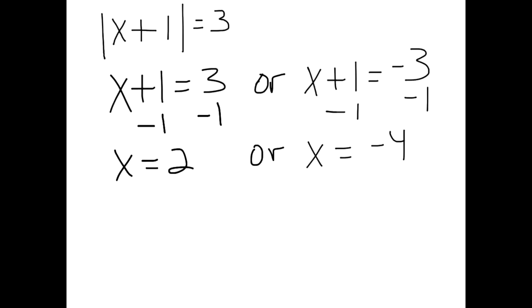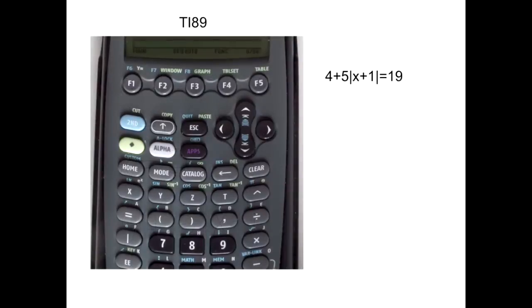Now let's take a look at how to do that on the TI-89 graphing calculator. Remember our original equation was 4 plus 5 times the absolute value of x plus 1 equals 19. On the TI-89 calculator, we're going to begin by entering this equation. You want to hit F2.